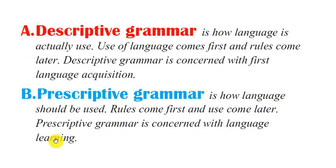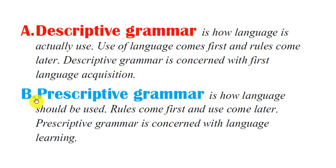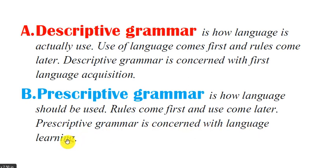What is descriptive grammar? Descriptive grammar is how language actually comes first and rules come later. Descriptive grammar is concerned with first language acquisition. What is prescriptive grammar? Prescriptive grammar is how language should be used — rules come first and use of language comes later. Prescriptive grammar is concerned with language learning, or we can say language teaching.